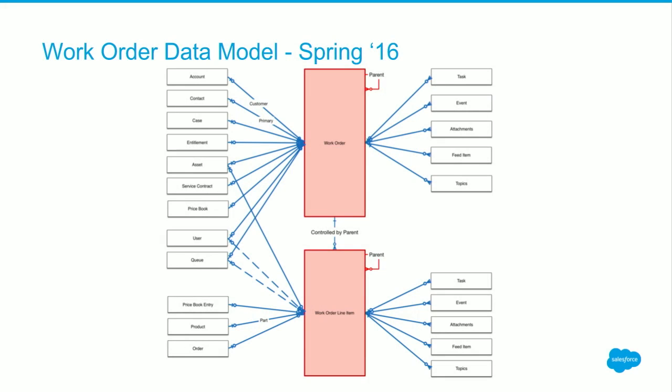It also has pre-built integrations with all the other objects. You can link it — it's already linked to accounts, contacts, cases, assets, and so many other things available out of the box. We also want to model this like real life scenarios, so every work order can have a number of work order line items. One thing to call out: this is now available with Spring 16, but you will have to go in and enable it for your account for it to start working.